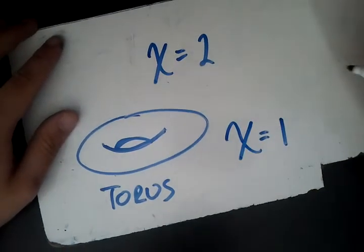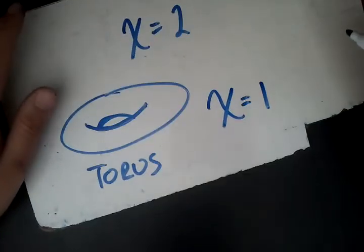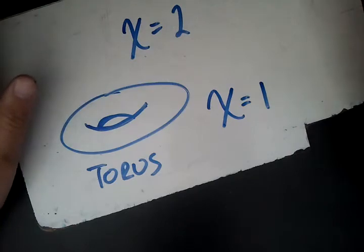Instead, chi equals 1. That means faces plus vertices minus edges of a torus equals 1.